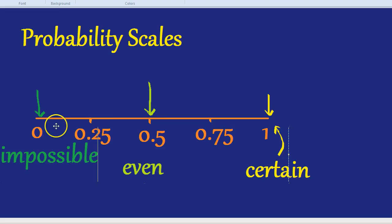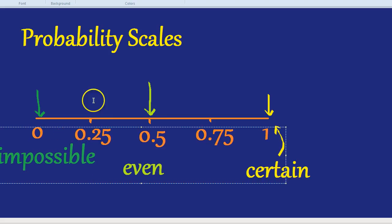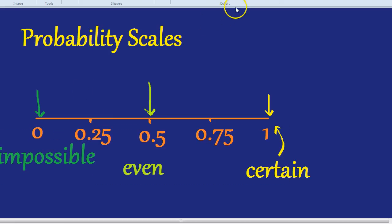Let's try some trickier probabilities. What's the chances, let's do it in brown, that if I roll a die, which is the singular of dice, if I roll a die, what's the chances I get a one or a two?